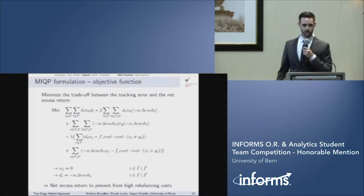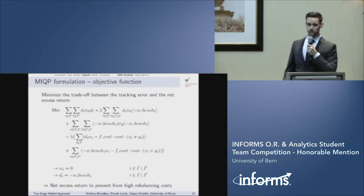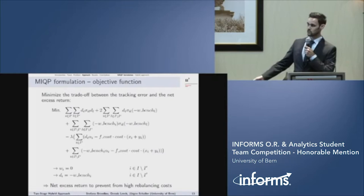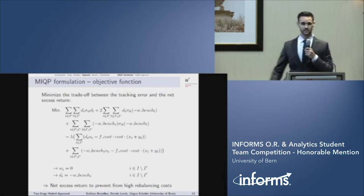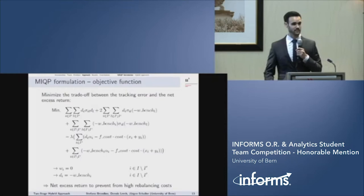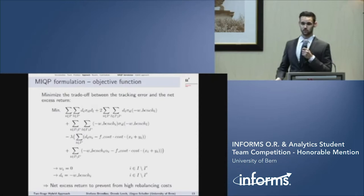The objective at each rebalancing date is to minimize the trade-off between the tracking error and the net excess return. The first two lines represent the tracking error. Since we used only a subset of all stocks, we had to adjust the formulation because all stocks which are not in the subset have a weight of zero and therefore still an active weight of minus its index weight. The following two lines represent the net excess return. We called it net, since we directly include the costs for rebalancing in our formulation. This is done to prevent from high rebalancing costs.